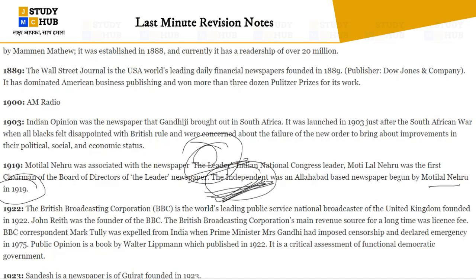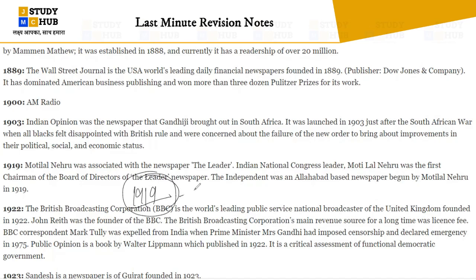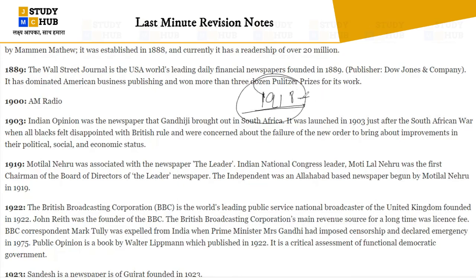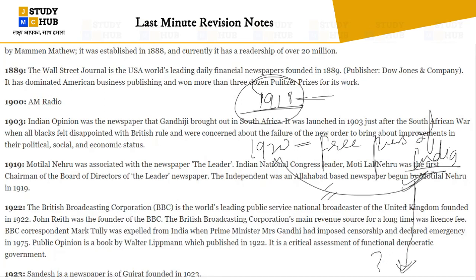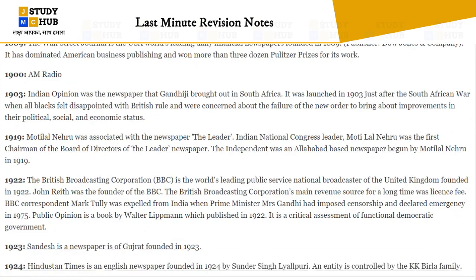Also in 1919, Satyagraha — launched by Mahatma Gandhi. In 1918, there was Searchlight. In 1920, Free Press of India was launched by Swami Sadanand. Please note it down: Free Press of India, 1920, founded by Sadanand.